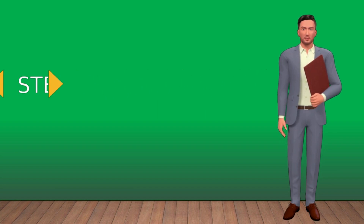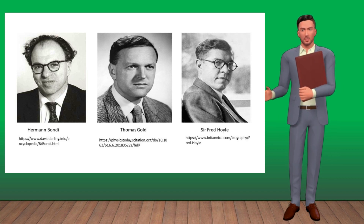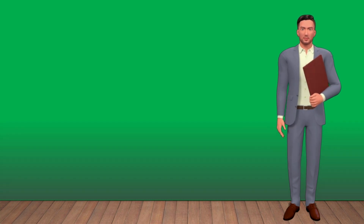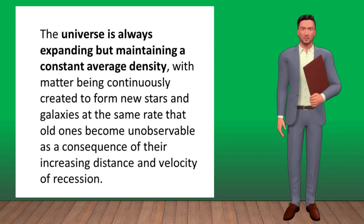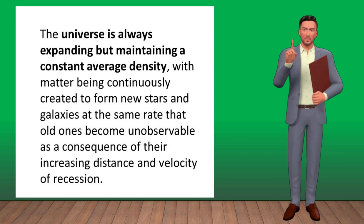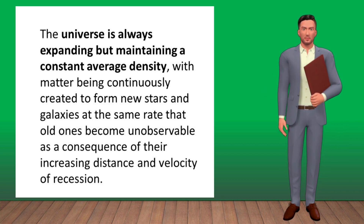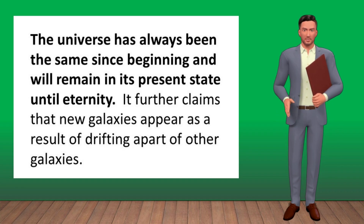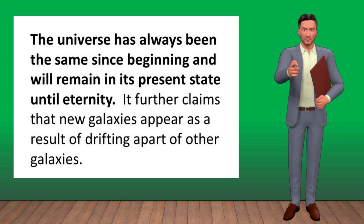The Steady State Theory was first put forward in 1948 by British scientists Sir Herman Bondi, Thomas Gold, and Sir Fred Hoyle. In this theory, the universe is always expanding but maintaining a constant average density, with matter being continuously created to form new stars and galaxies at the same rate that old ones become unobservable as a consequence of their increasing distance and velocity of recession. This theory also claims the universe has always been the same since the beginning and will remain in its present state until eternity, and that new galaxies appear as a result of other galaxies drifting apart.